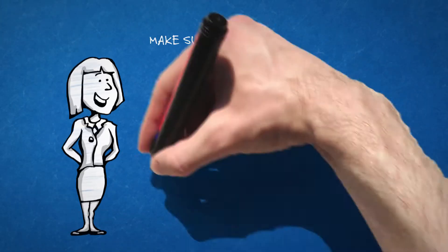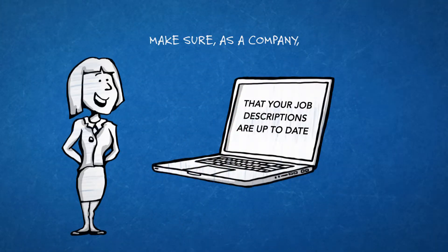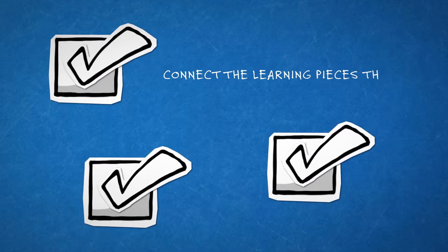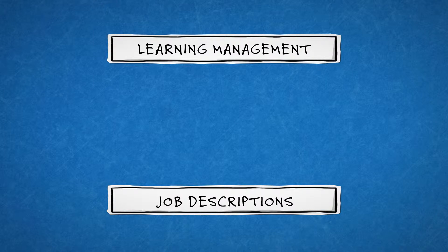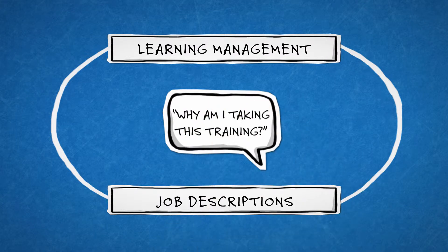Make sure, as a company, that your job descriptions are up-to-date and that they connect to the learning pieces that support the requirements for the job. Job descriptions are the first connection to learning management, which is vital as you respond to the 'why am I taking this training?' from your employees.